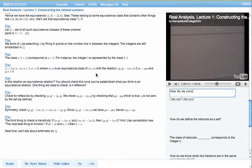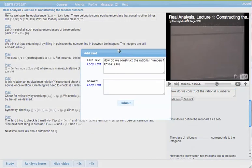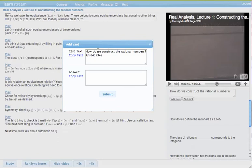So how do we construct the rational numbers. I can quickly click add card, and as you see it pops up a dialog box here with my question, and we'll describe this in a second, but a sync to the point in the lecture where this would come up.